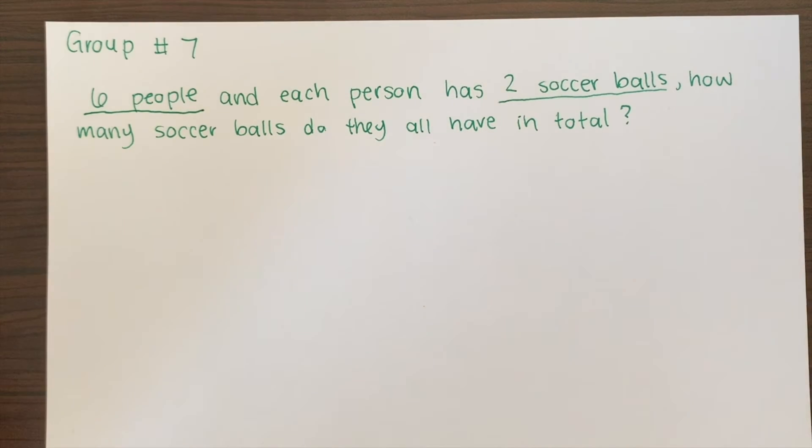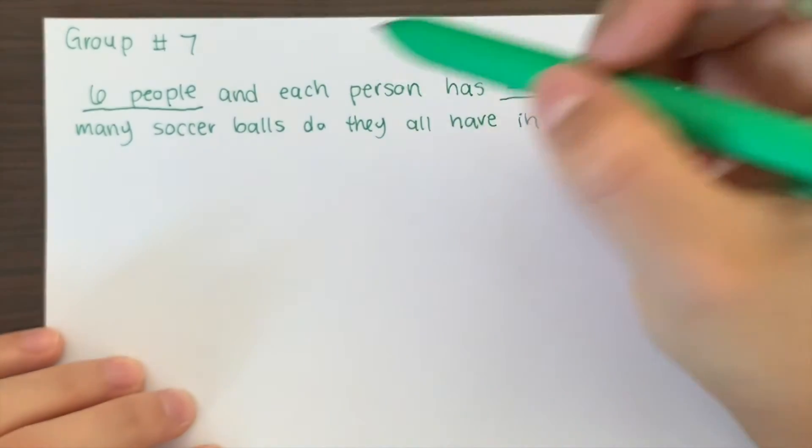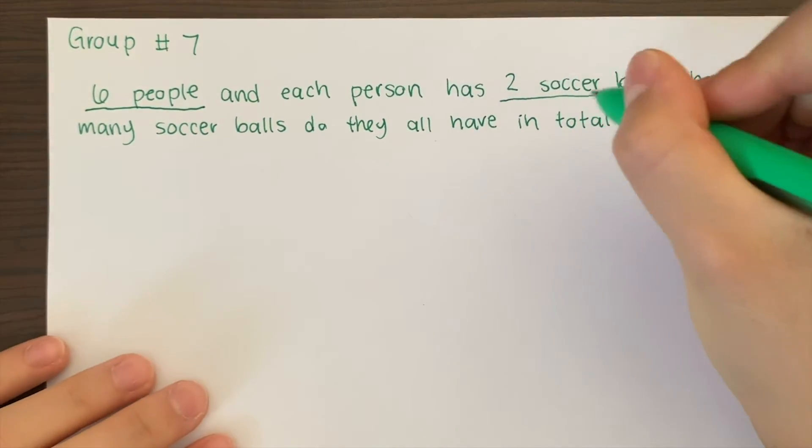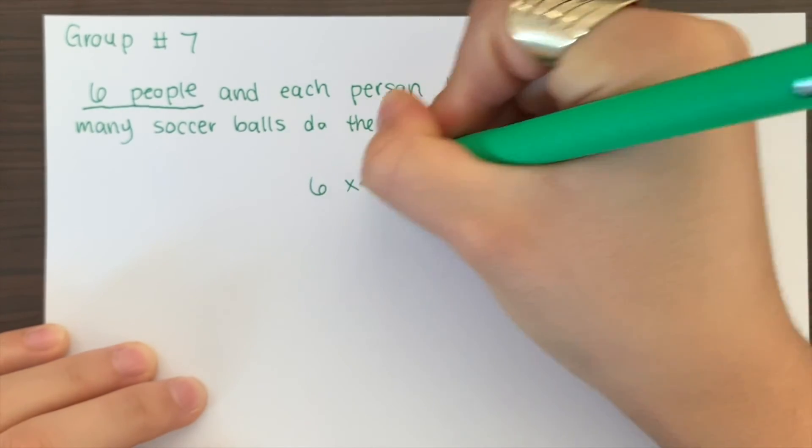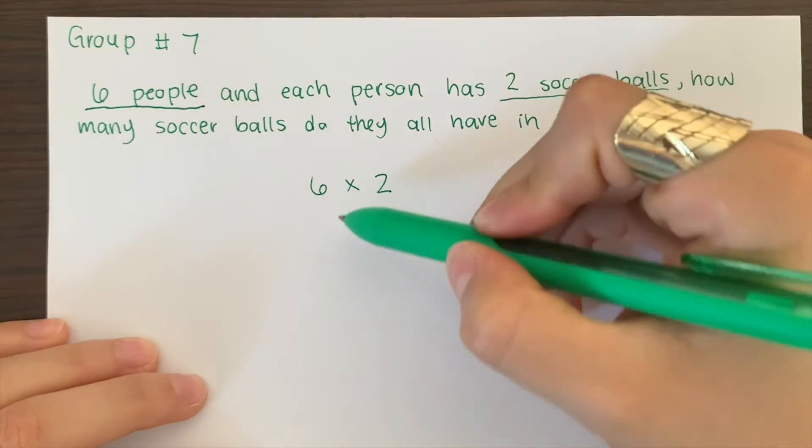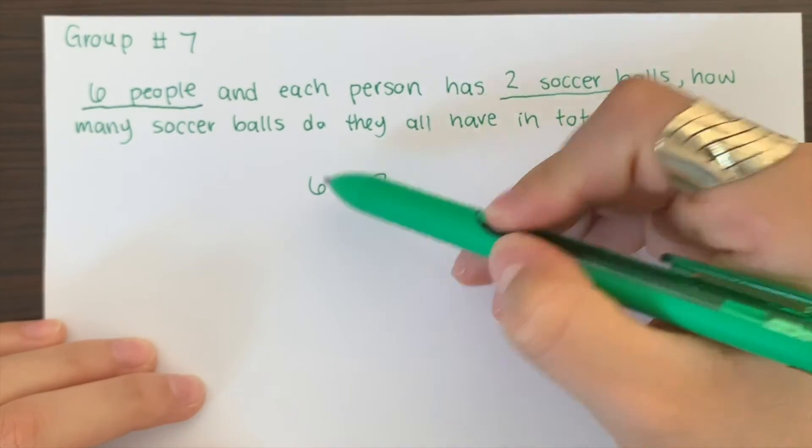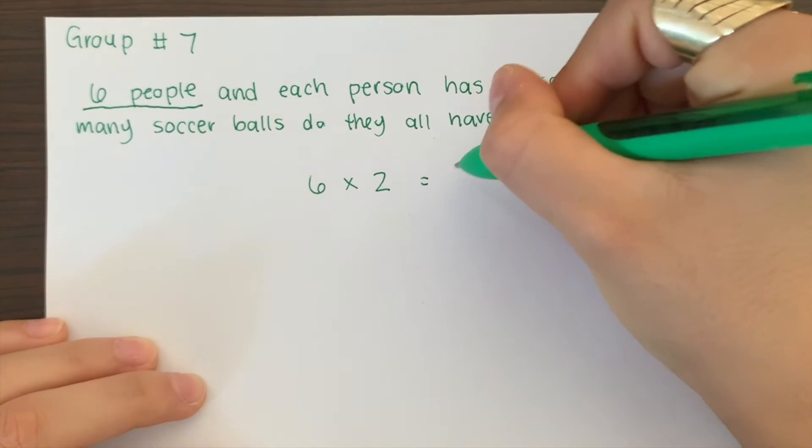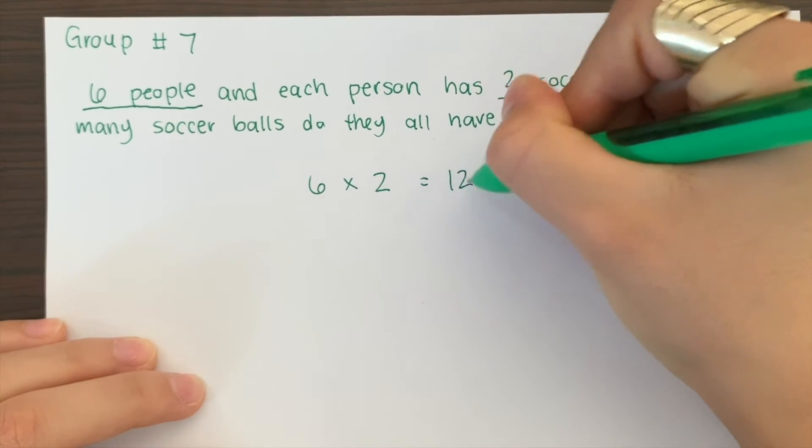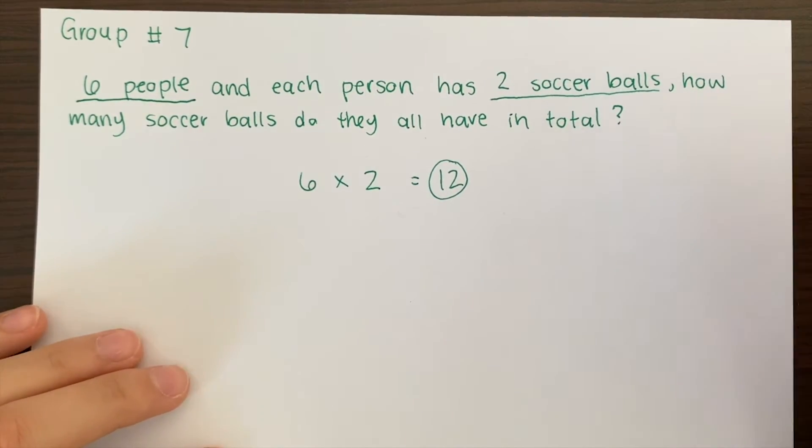But if you're not comfortable with multiplication, you could do a little drawing and adding. But the goal is to put a multiplication equation together. Since we have six people and each person has two soccer balls, then that means that we're going to multiply six by two. This is basically telling us that each person has two soccer balls. And six times two equals 12. That would give you your answer.